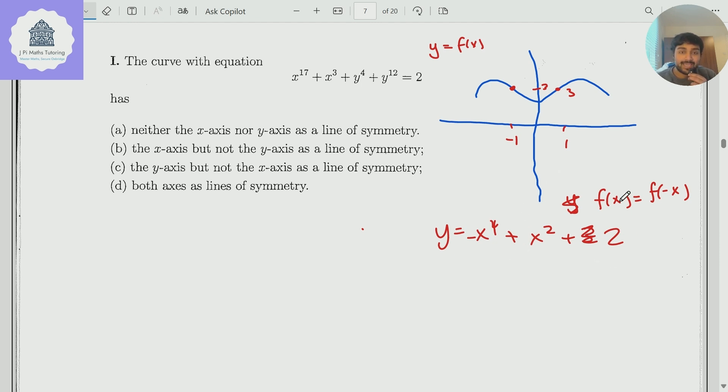when I swap the x's for minus x's, because when you raise a negative number to the power of 2, it's basically the same as raising the positive number to the power of 2. This is just the same thing. And so therefore, f of minus x is this, which is the same as the original function.